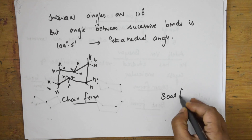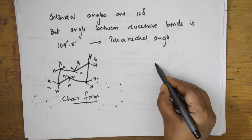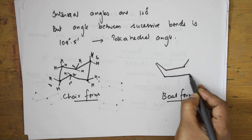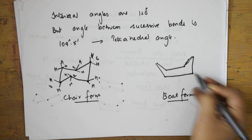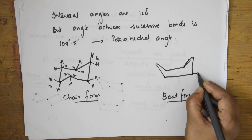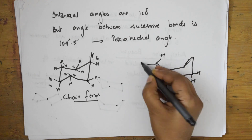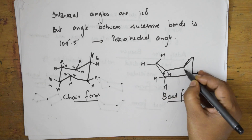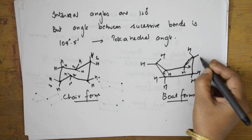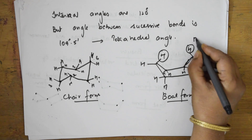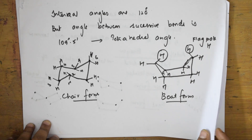Now, for the boat form of cyclohexane, we again fill in all six hydrogens. In the boat form, two specific hydrogens — this hydrogen and this hydrogen — are called flagpole hydrogens. Cyclohexane is expected to have more deviation from the ideal angle, which explains the existence of chair and boat forms where the bond angle is exactly the tetrahedral angle.